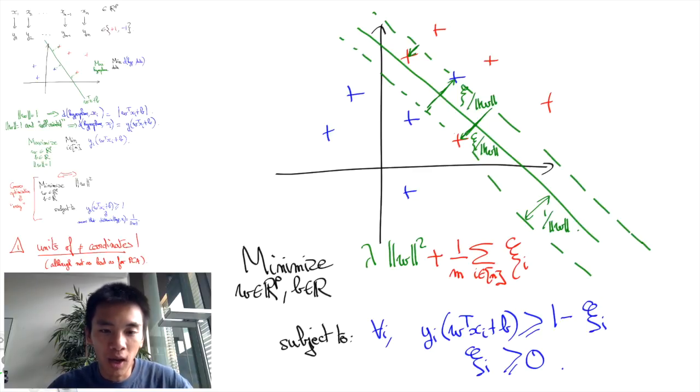Note that we have a hyperparameter here, lambda, which tells us how much we care about separating data from the hyperplane versus making errors in this separation. In particular, the limit where lambda goes to 0 is the case where violations of the linear separation are unacceptable, hence essentially yielding back hard SVM.